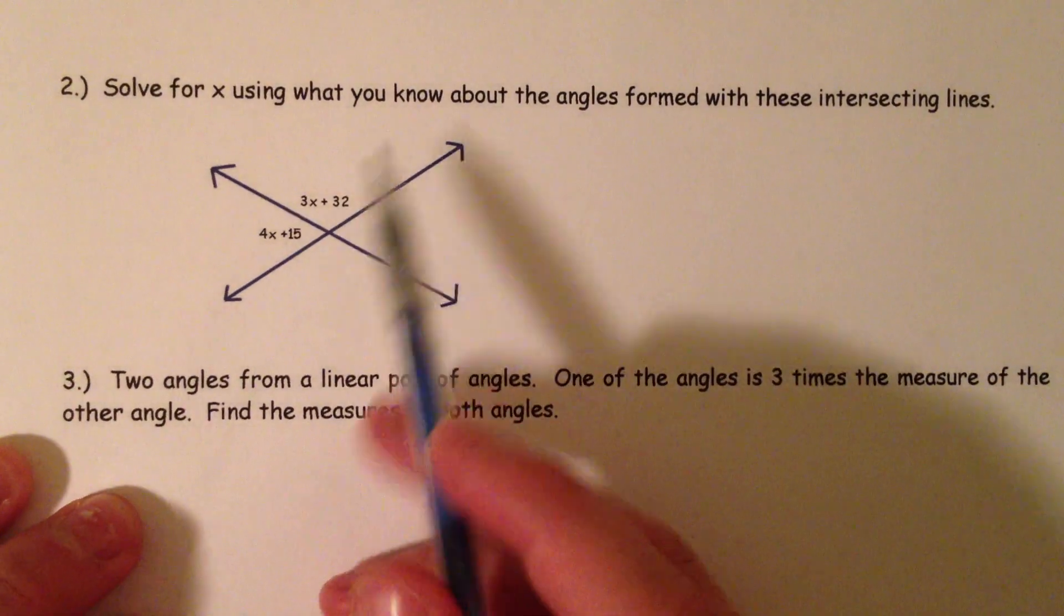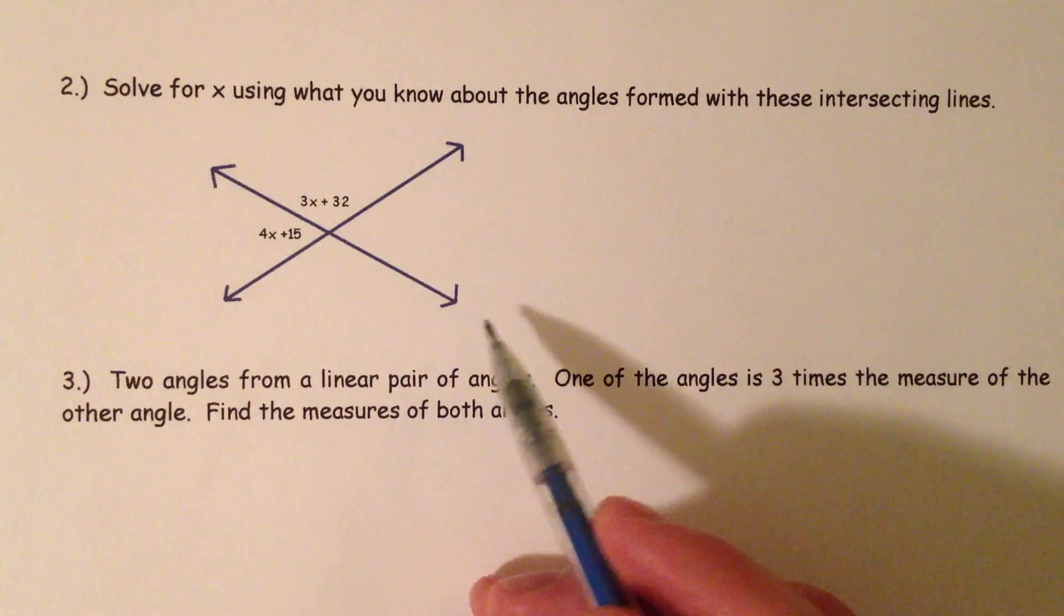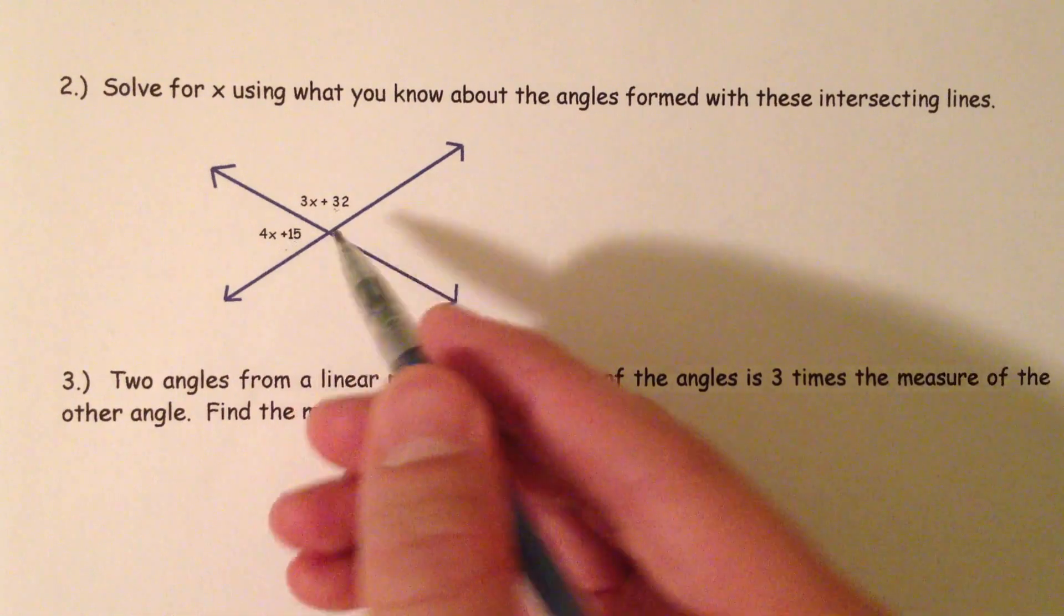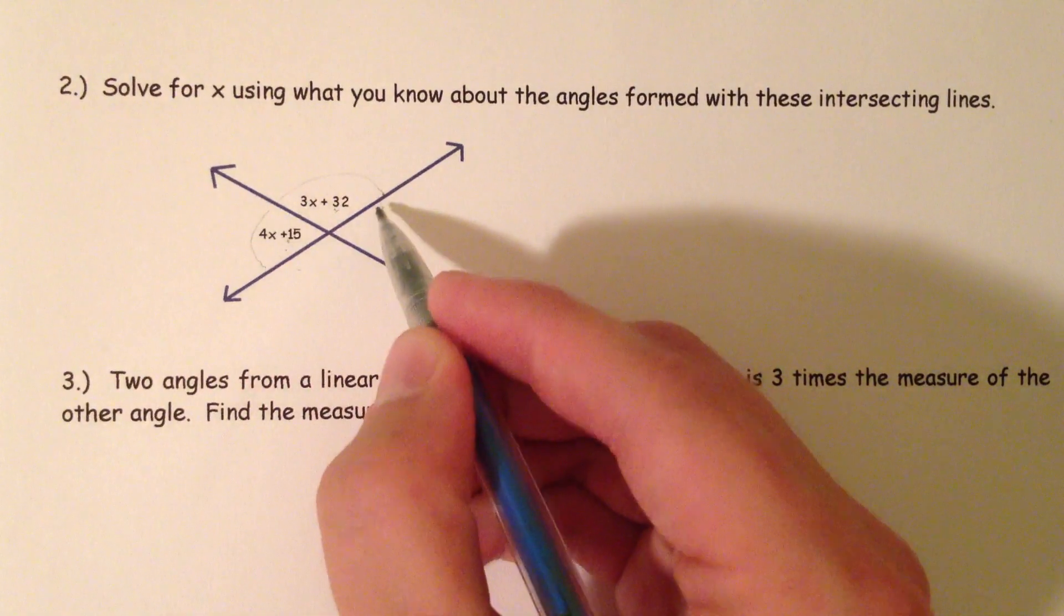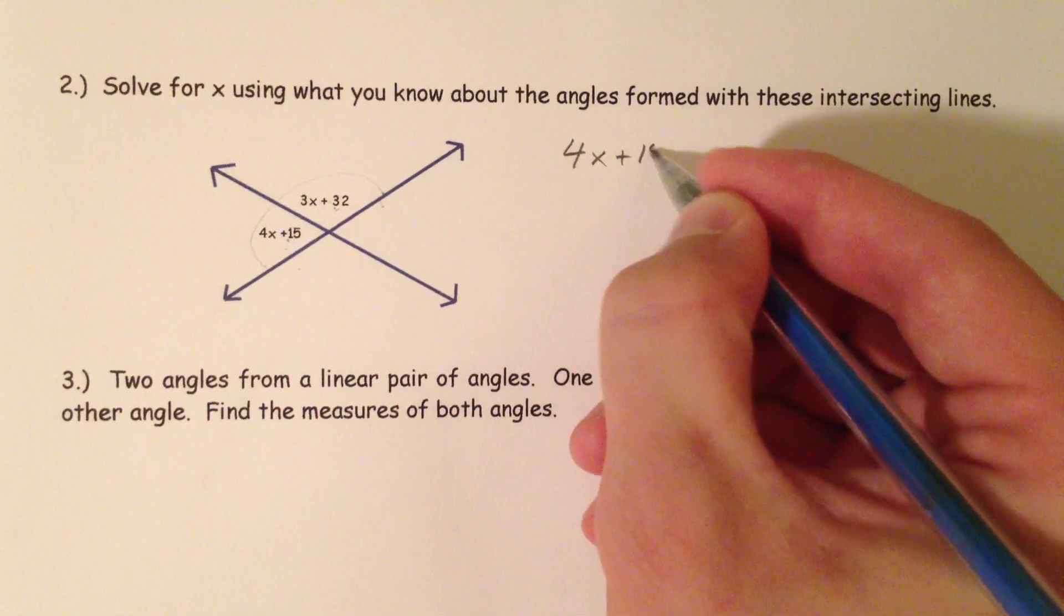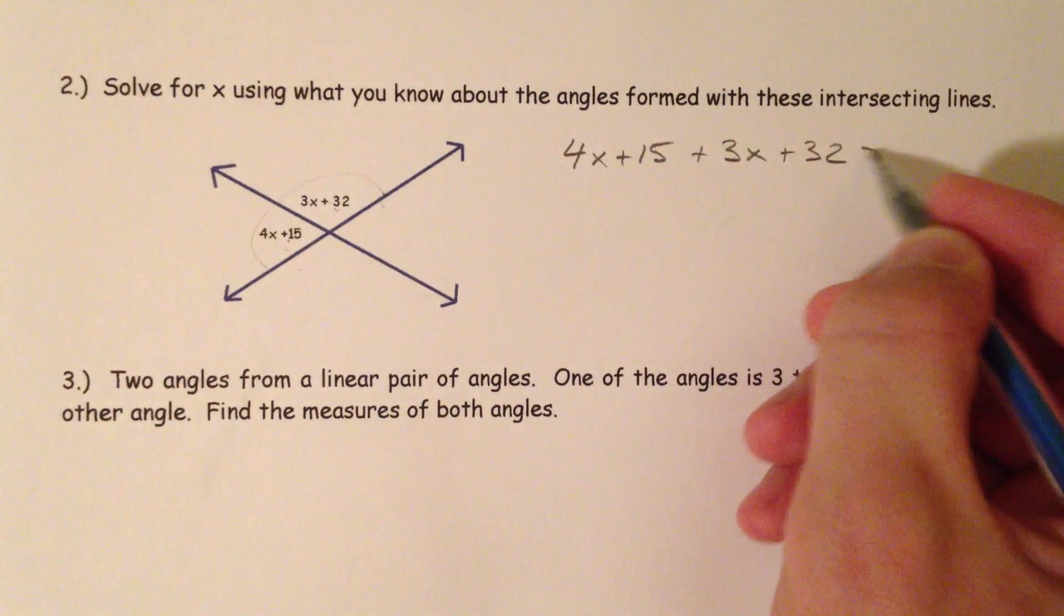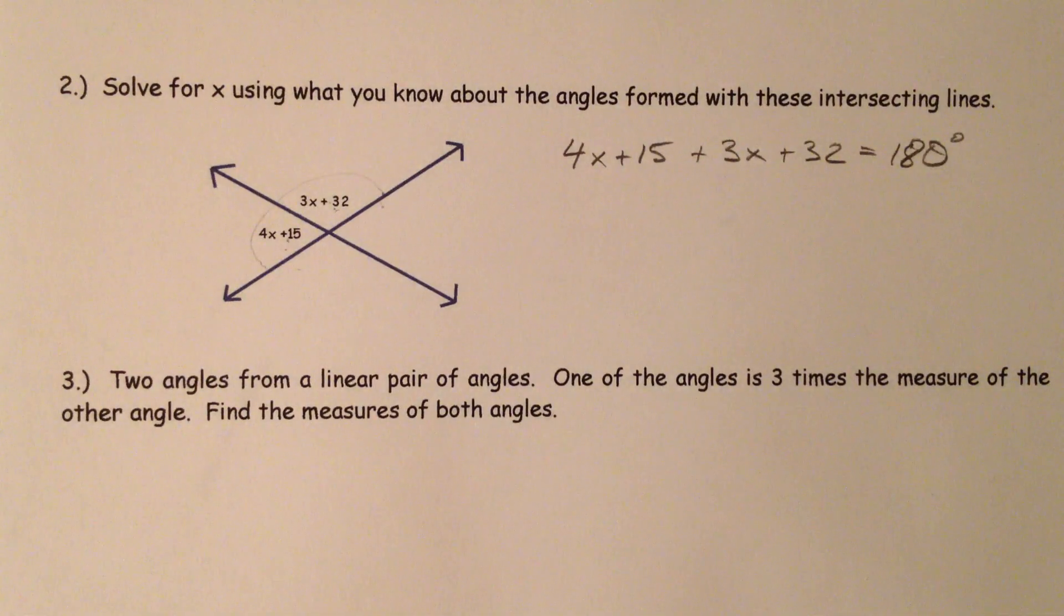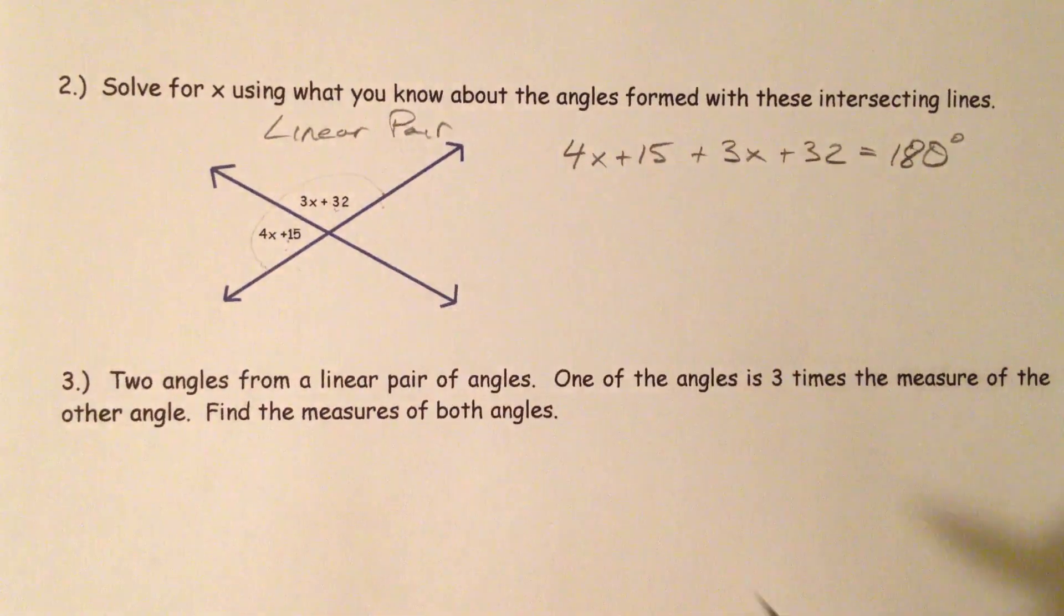Next example, we're going to solve for X using what we know about these angles. Now, we've got these angles coming together. These two angles are what are called the linear pair. They form that straight angle. And so we know that this angle plus this angle better be 180. So I'm going to set up an equation about that. 4X plus 15 plus 3X plus 32 better equal 180 because they are a linear pair, which is a special kind of supplementary angles.